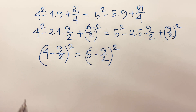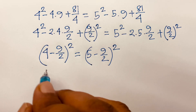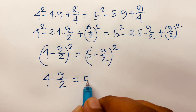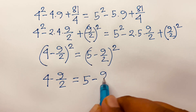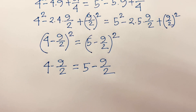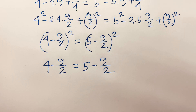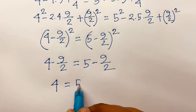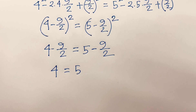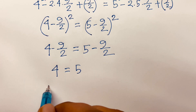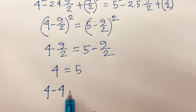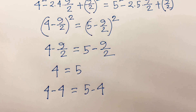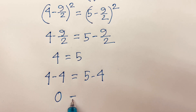Then I take the square root of both sides, so I get 4 minus 9/2 is equal to 5 minus 9/2. Then if I add 9/2 to both sides, I get 4 is equal to 5. Then if I subtract 4 from both sides: 4 minus 4 equals 5 minus 4, giving 0 is equal to 1.